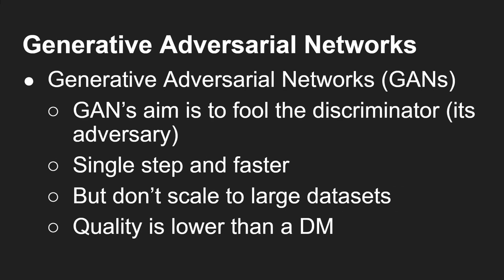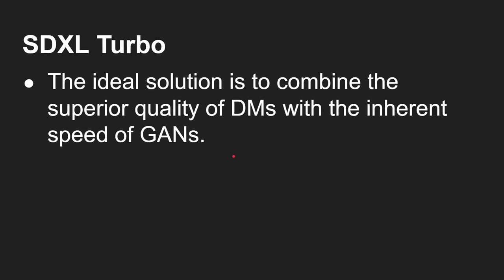There's another type of generative network — an adversarial network, a GAN — that can create an image in one shot. The aim of a GAN is to fool a discriminator, its adversary, which judges whether an image is good or not. The GAN is trained on many images and learns to generate images that fool the discriminator. It's single-step and faster, but it doesn't scale to large datasets, and it produces lower quality than a diffusion model. The idea with the new model is to create something that has the superior quality of a DM but the inherent speed of a GAN — so you don't need to go through 50 steps.